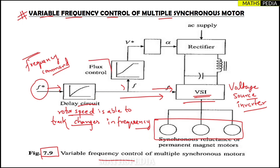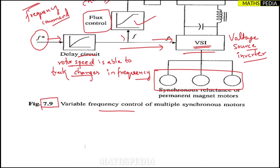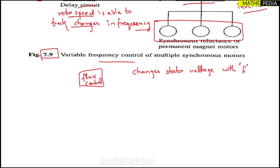Coming to the second point: the flux control block is present in the diagram. What does this flux control block do? It changes the stator voltage with frequency. So this flux control block will change the stator voltage with respect to frequency in order to maintain two things.